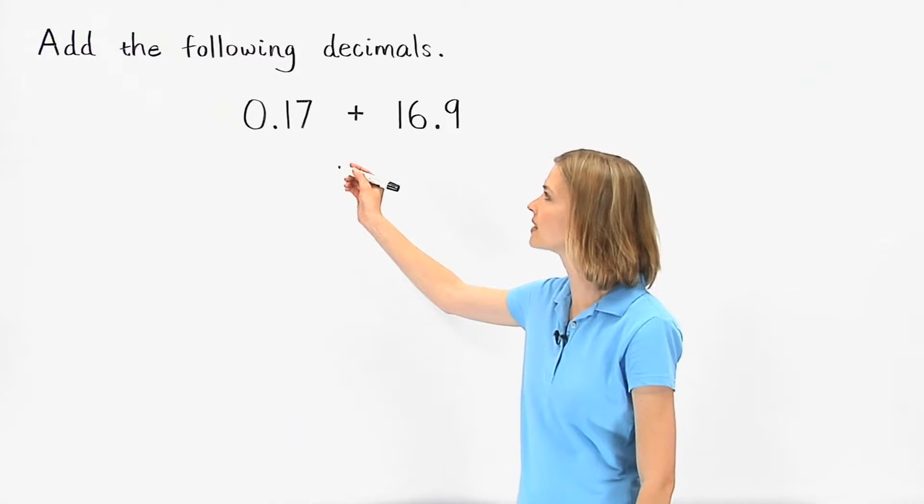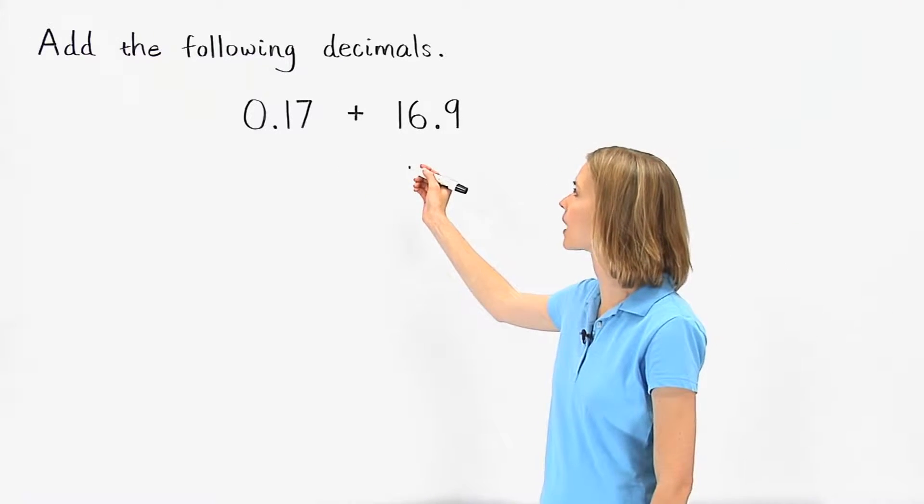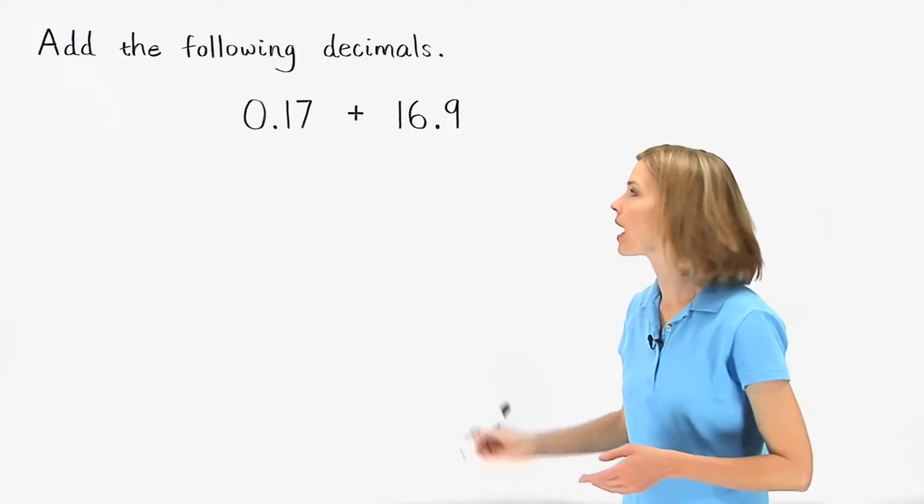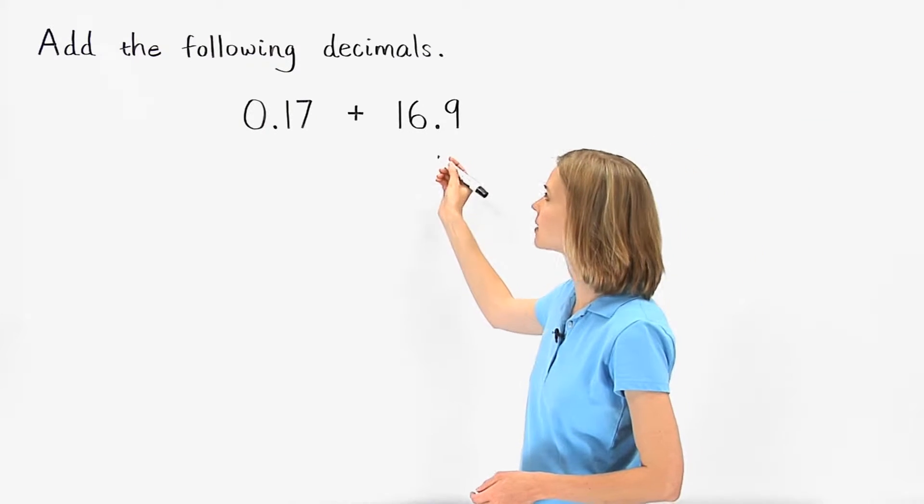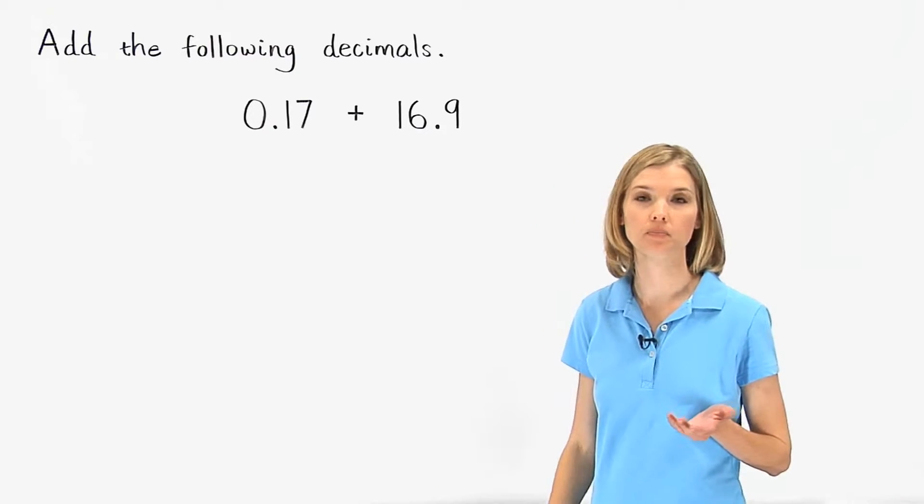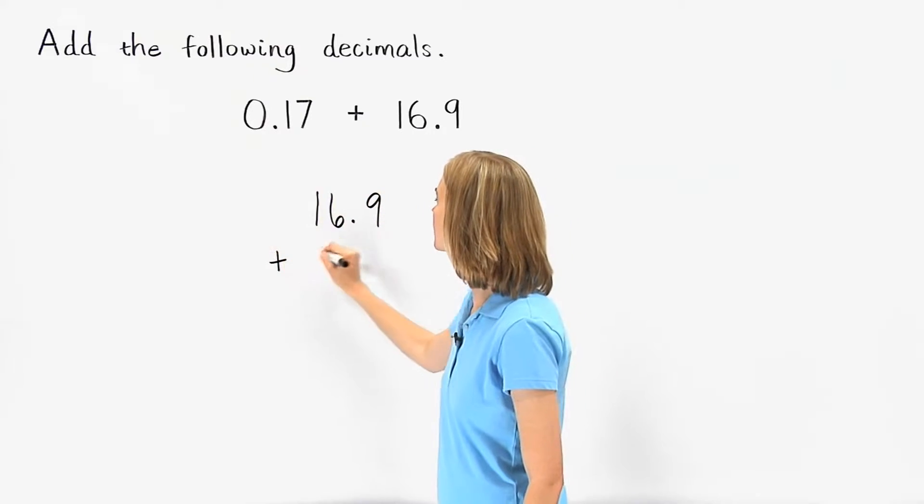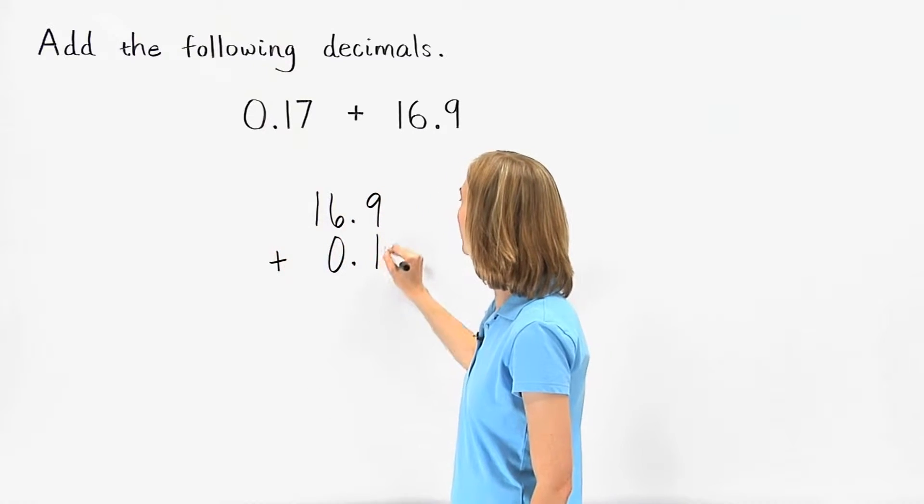To add 0.17 plus 16.9, first line up the decimals. In this problem, I would put 16.9 on top since it's the larger number. So we have 16.9 plus 0.17.